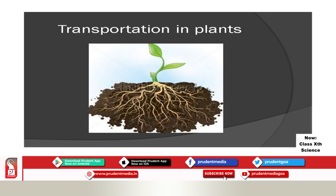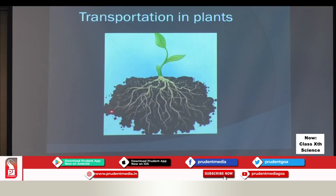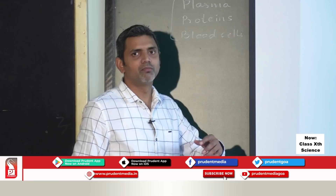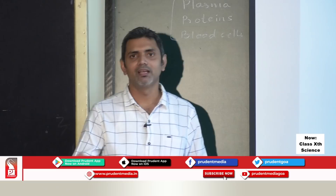Roots have fine root hairs that are in contact with the soil. Root hairs actively take ions from the soil. Plants require minerals like phosphorus, iron, and magnesium. When there is a difference in concentration of ions between the roots and the soil, water enters the roots to eliminate this difference and slowly a water column rises. This is one of the ways water enters the plant.